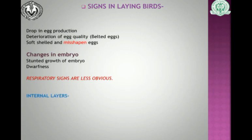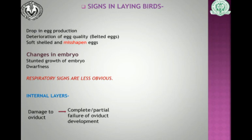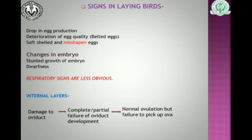A condition called 'internal layers' can develop due to this virus damaging the oviduct. There is complete or partial failure of oviduct development, which causes normal ovulation later in life. However, since the oviduct is underdeveloped, it is unable to pick up the normally ovulated ova. As a result, the ova may shed into the body cavity itself, leading to the condition of internal layers.